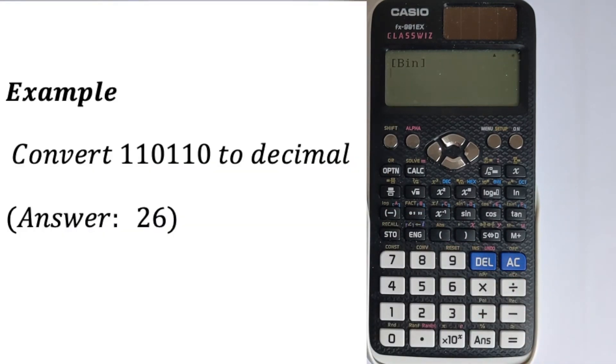Let's now do another example where we're going to convert 11010 to decimal. We input that: 11010, then press equals. That enters it to the calculator's memory in binary.